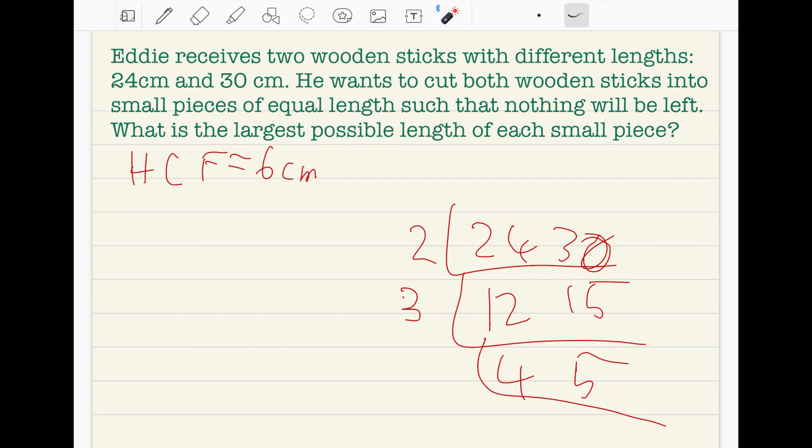We don't need the LCM, we only need the highest common factor. The largest possible length of each small piece is 6 cm. Thank you for watching, I hope you like and subscribe.